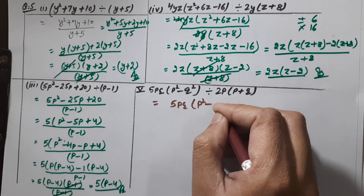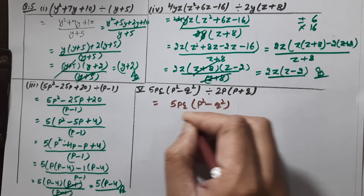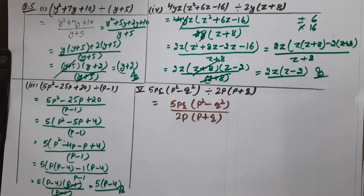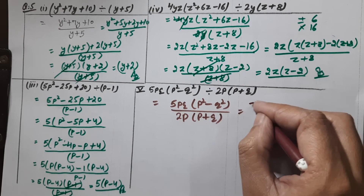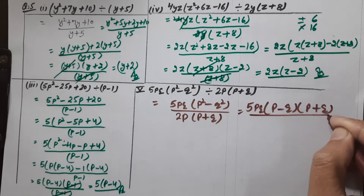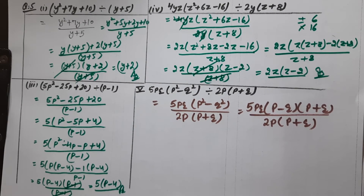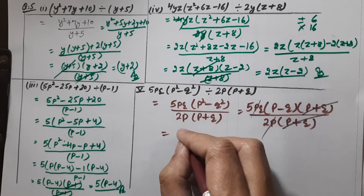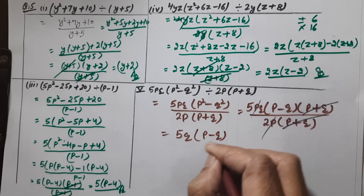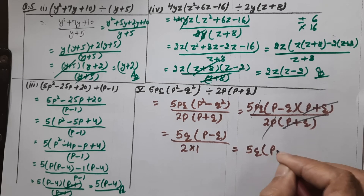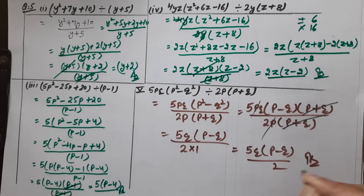Now we are doing the fifth part: 5p cubed into (p squared minus q squared) over 2p into (p plus q). From the question it is clear we will use the identity a squared minus b squared equals (a minus b)(a plus b). So: 5p cubed into (p minus q)(p plus q) over 2p into (p plus q). Cancel (p plus q) with (p plus q), and p with p. We are left with 5p squared times (p minus q) over 2, so our answer is 5p(p minus q) over 2.